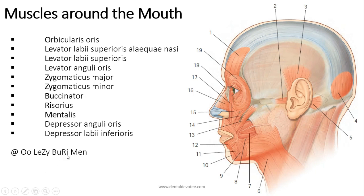From buri, BU stands for buccinator, R for risorius, and M for mentalis. So whenever you have to remember all the muscles around the mouth, just remember oh lazy buri men. How easy is that!